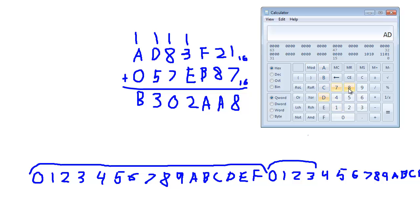Let's add these using the calculator. So it looks like we have A, D, and you can hit your keyboard too. The calculator will respond to the keyboard. So A, D, 3, F, 2, 1, plus 0, 5, 7. Notice it drops the leading 0. So E, B, 8, 7 equals B, 3, 0, 2, A, 8. That's interesting. So groups have been to 4s as well. That's probably actually useful because we'll talk about that later.